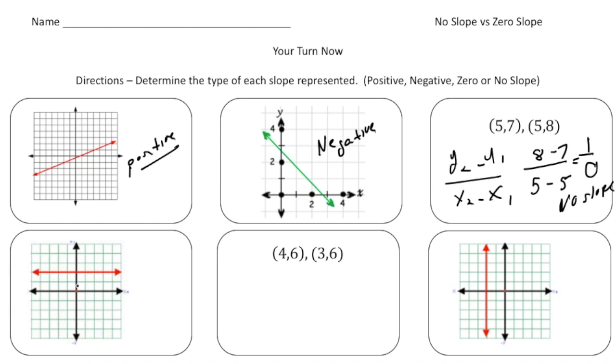This one here, we have a horizontal line. So remember, this would be zero fun if it was a ride. So this is a zero slope.